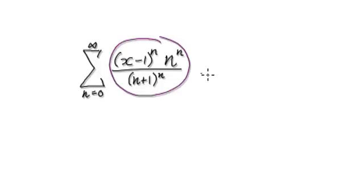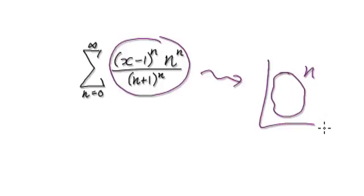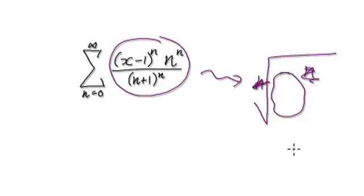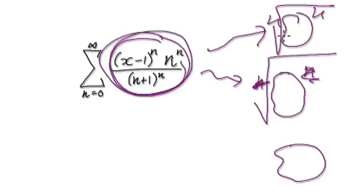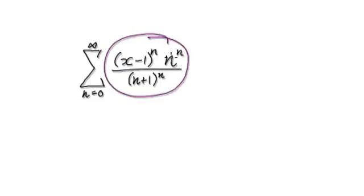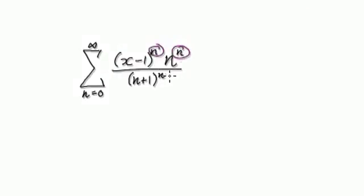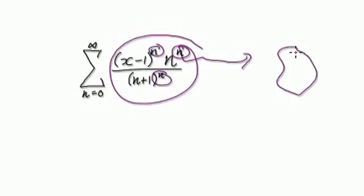If you look at this, if you can somehow rewrite this in the form of something to the power of n, then when you take the root test, you take the nth root of this, and the nth and the root will cancel out. So the trick is to rewrite this as something to the power of n, and then take the nth root later on. The reason you can do this is because each part here is already to the power of n.